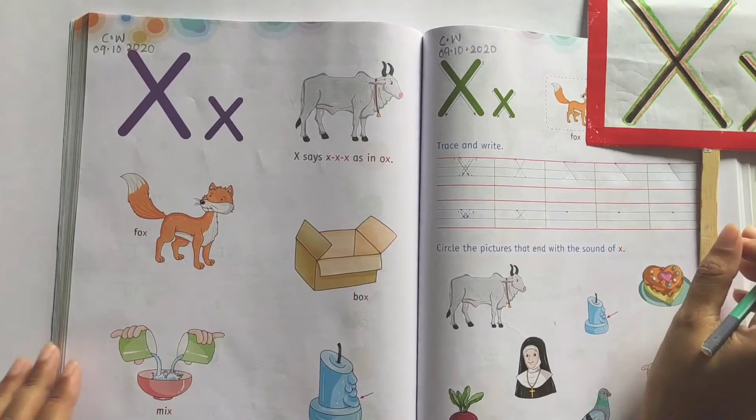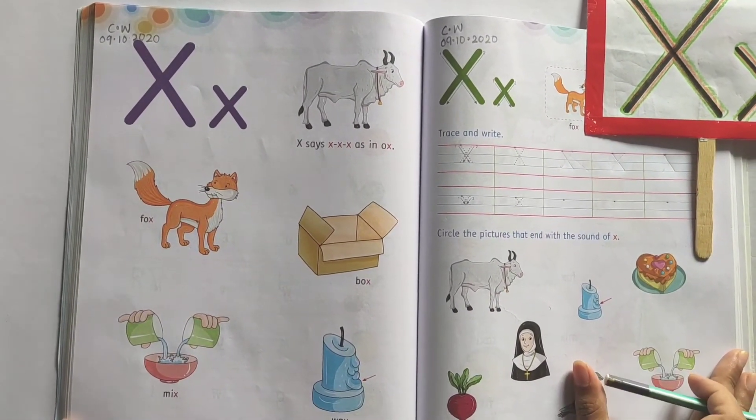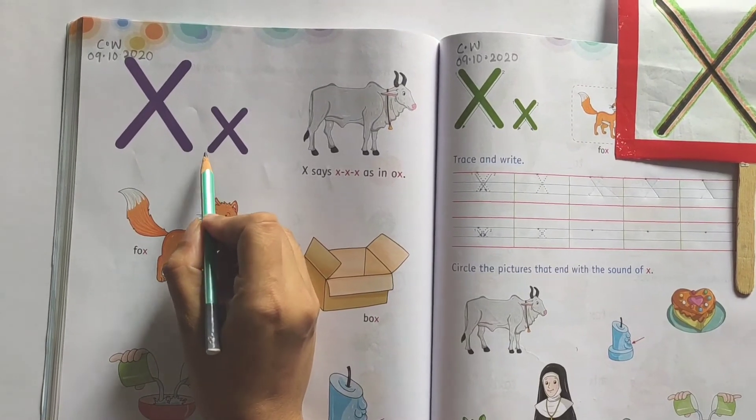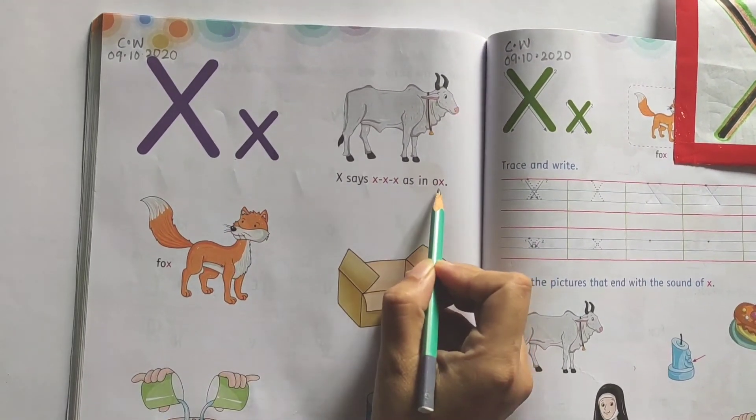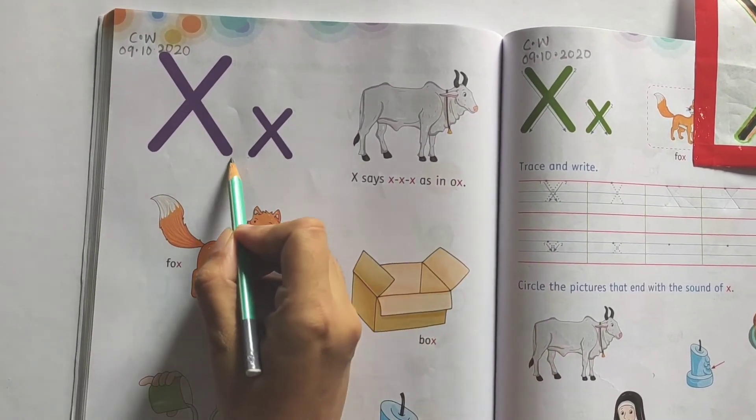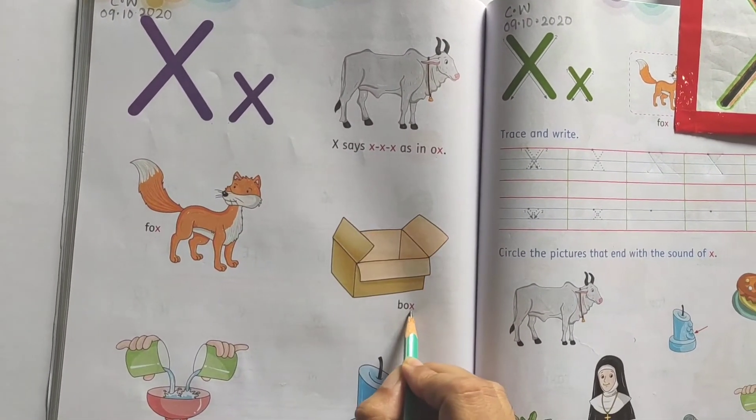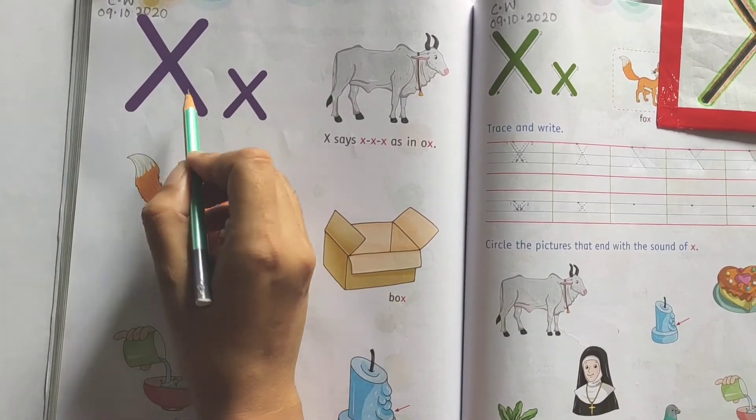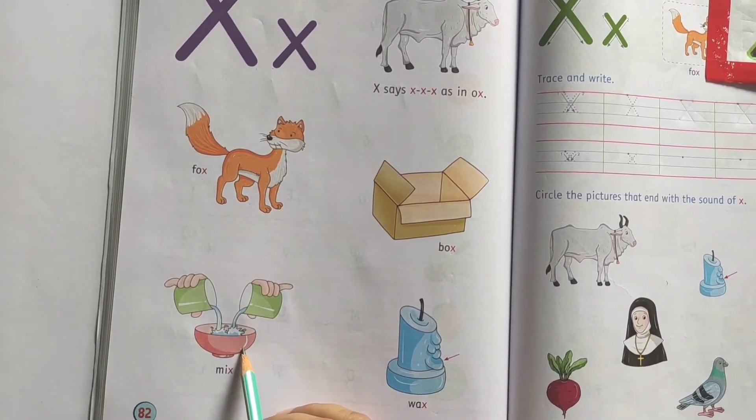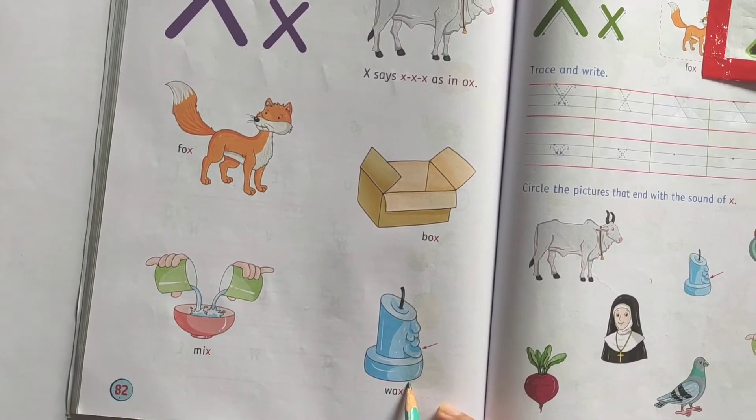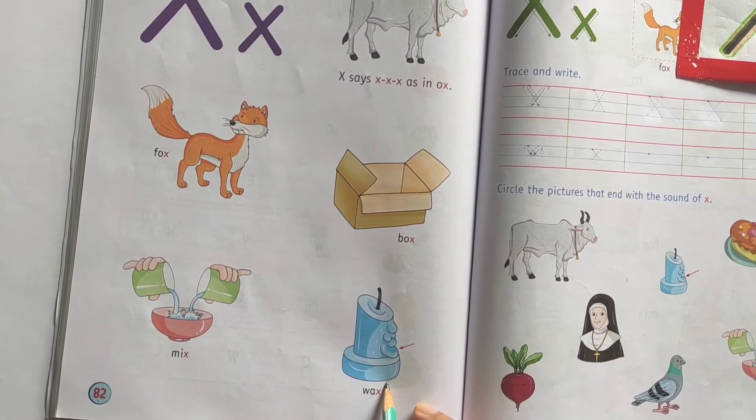Now, let us learn the pictures that end with the sound of X. X in ox. X in fox. X in box. X in mix. X in wax. Understood children?